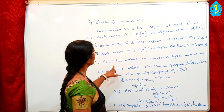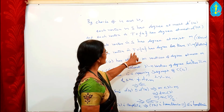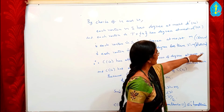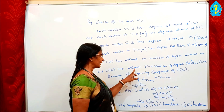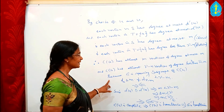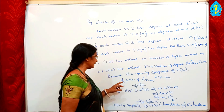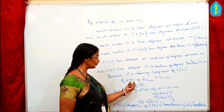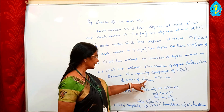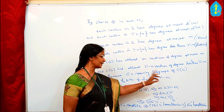Thus C(G) has at least M vertices of degree at most M, and at least gamma − M vertices of degree less than gamma − M. Since G is a spanning subgraph of C(G), any result true in G is also true in C(G). By our hypothesis, D_M ≤ M and D_{gamma−M} < gamma − M. We have obtained exactly D_M ≤ M and D_{gamma−M} < gamma − M, which is a contradiction.